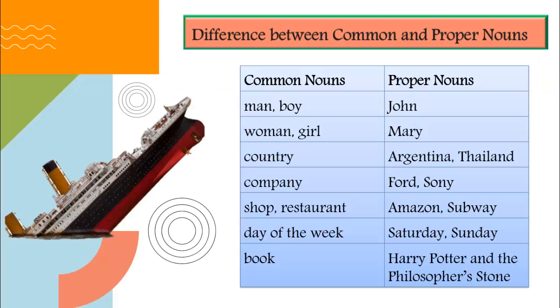Let's check out the difference between common and proper nouns. A common noun is a general way of classifying something, and a proper noun is a specific way of classifying something. For instance, the word 'dog' is a common noun, but if your dog is called Snoopy or Scooby-Doo, then either of these is a proper noun.